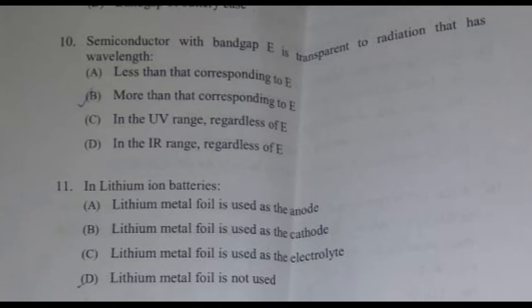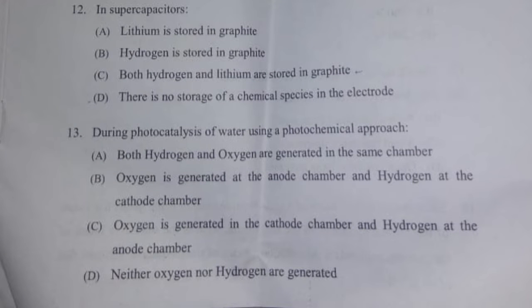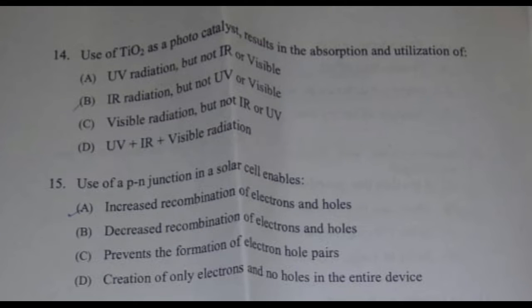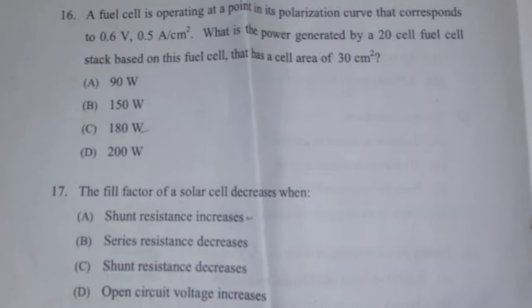Question 10: a semiconductor with bandgap E is transparent to radiation that has wavelength. Question 11: in lithium-ion batteries — four options. Question 12: in supercapacitors — four options. Question 13: during photocatalysis of water using a photochemical approach — four options given. Question 14: use of TiO2 as a photocatalyst results in the absorption and utilization of. Question 15: use of a p-n junction in a solar cell enables.